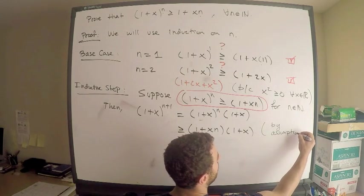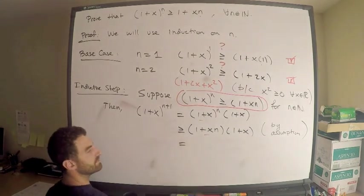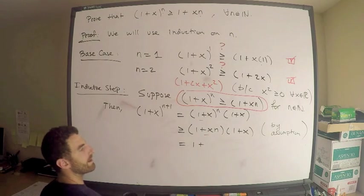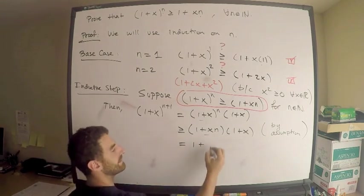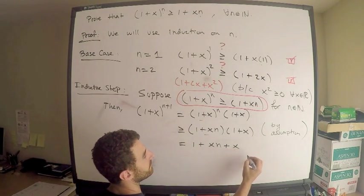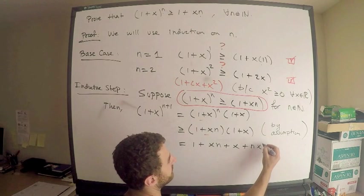All right. So now what? Well, we're pretty much good to go. Use your algebra skills, multiply these together. This is 1 plus xn plus x plus nx squared.